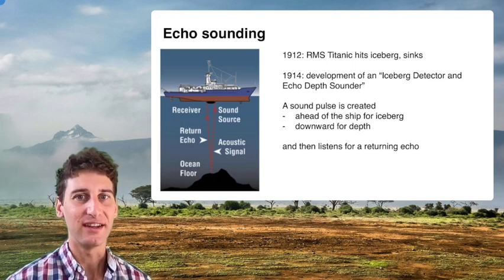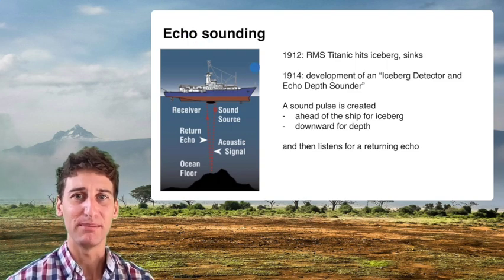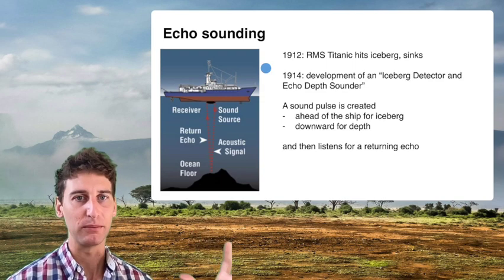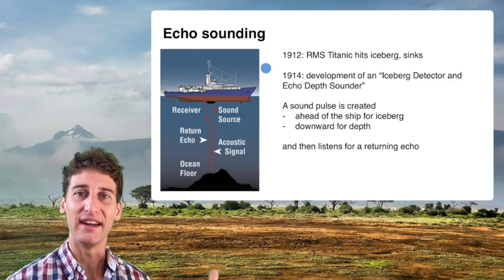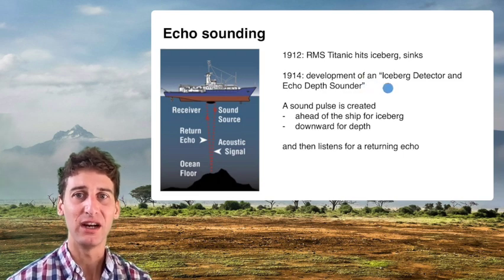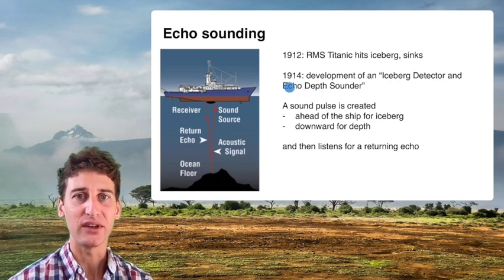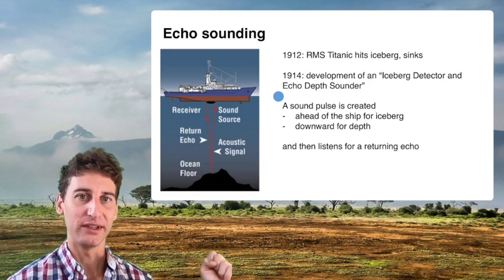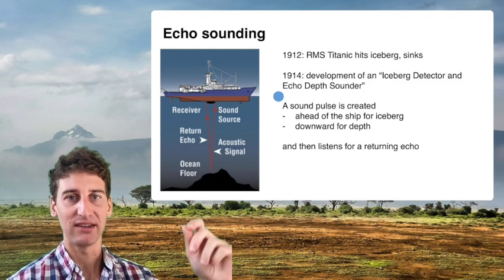A new technology emerged in the 1910s and 1920s that unlocked echo sounding. This idea was really born out of the Titanic disaster in 1912. The Titanic, the biggest ship ever built, hit an iceberg, sank, thousands died, and it was a huge disaster. This led to the development of an iceberg detector — an echo depth sounder. The idea was to use sonar techniques: a sound pulse that would tell you if there was an iceberg in front of you, even at nighttime. You could also see how deep the water was by directing the sound downward instead of outward.